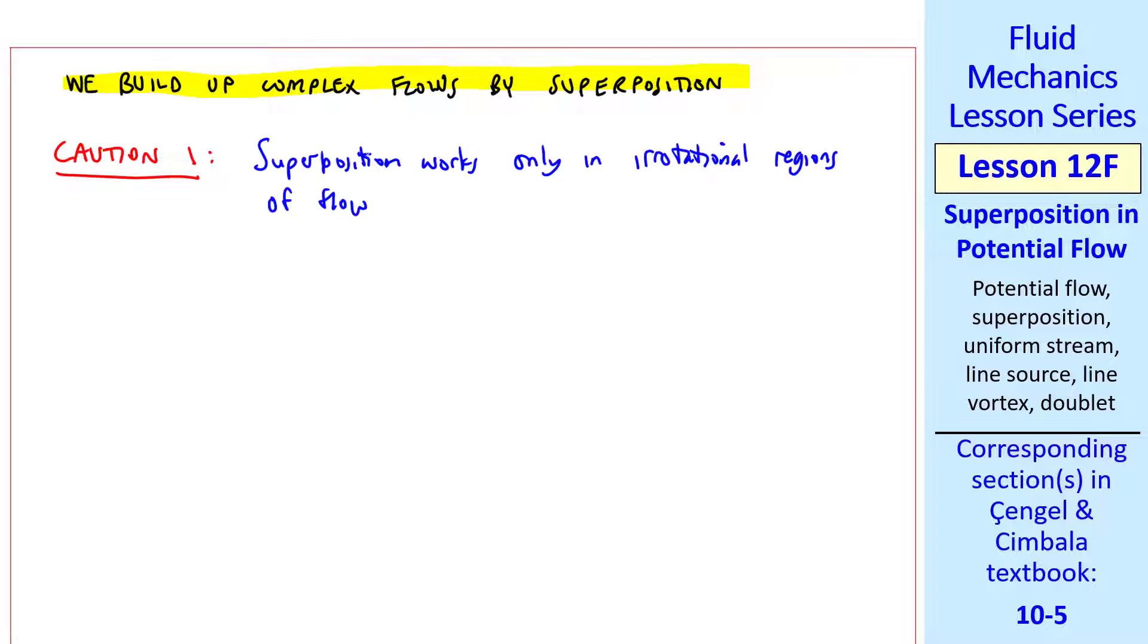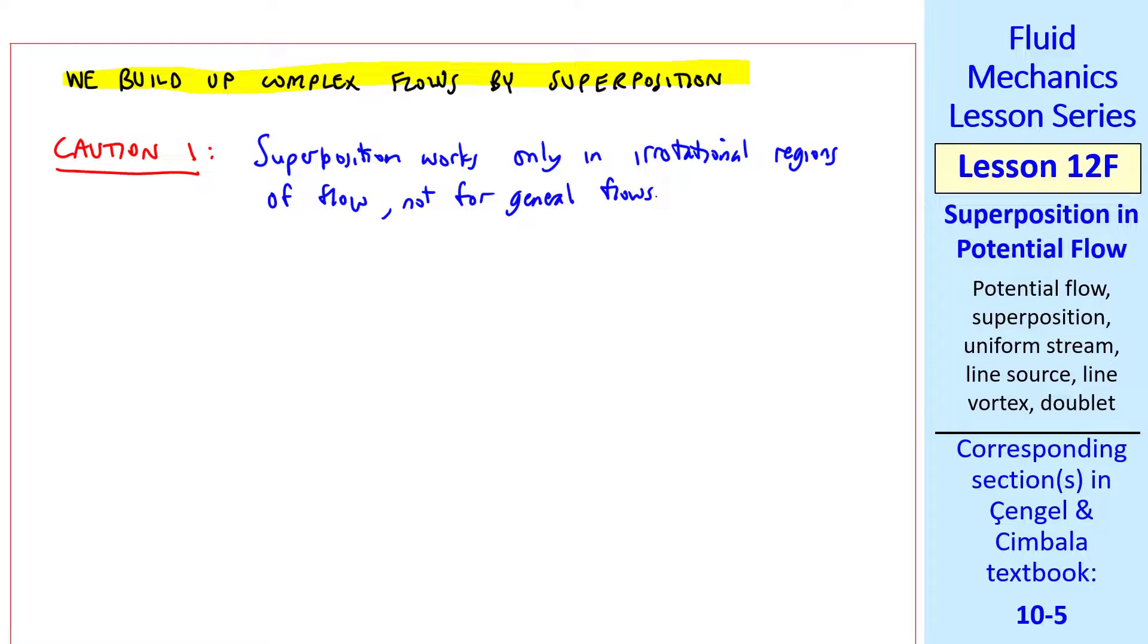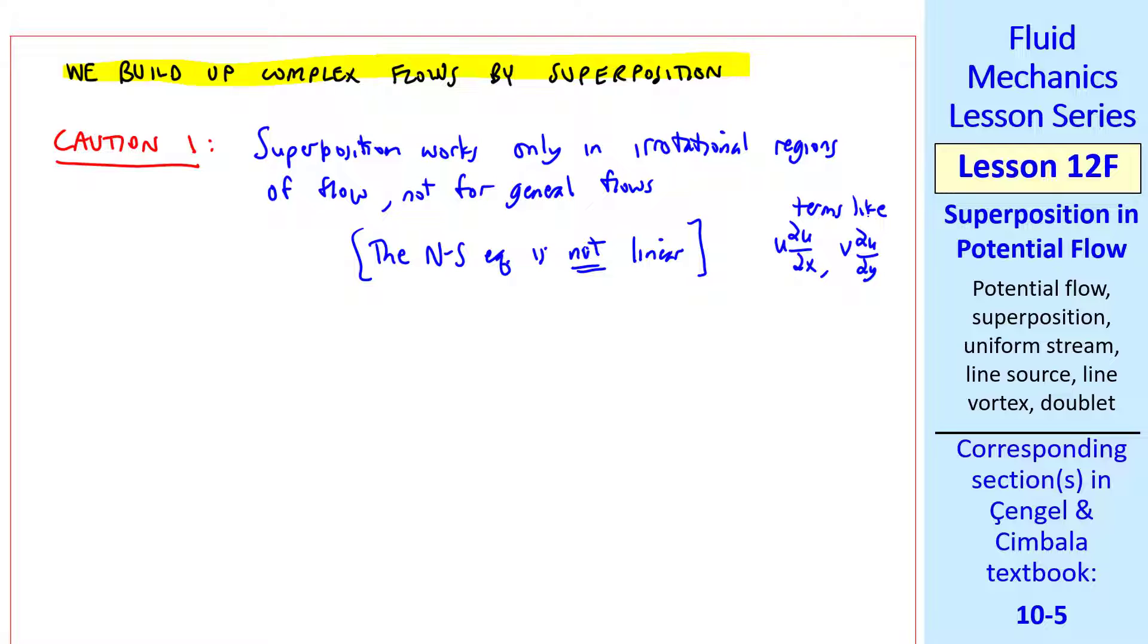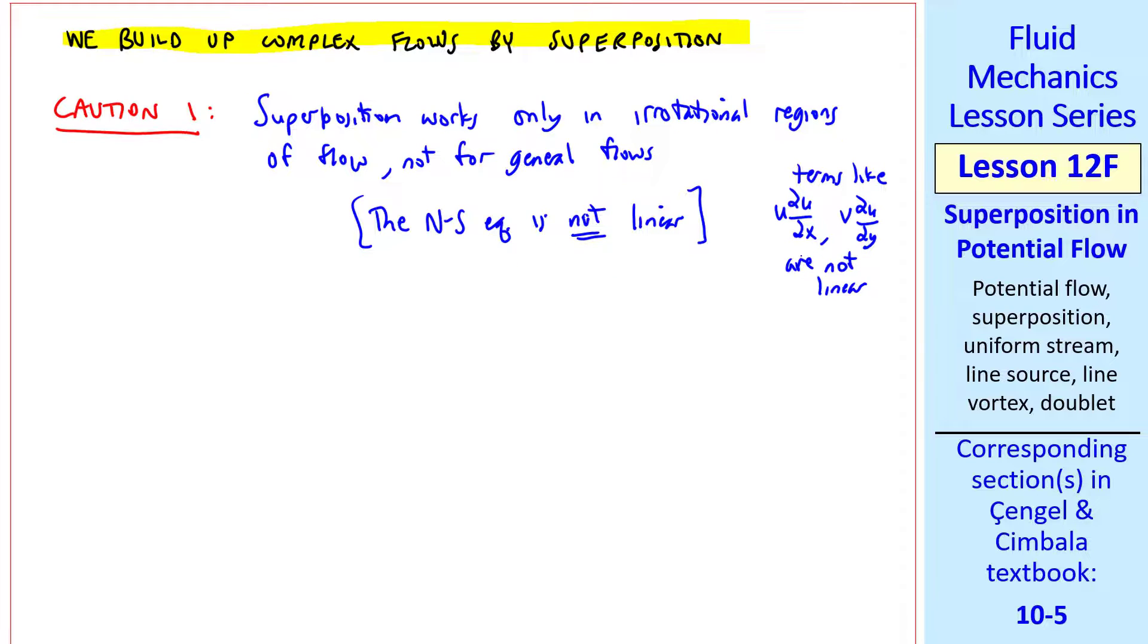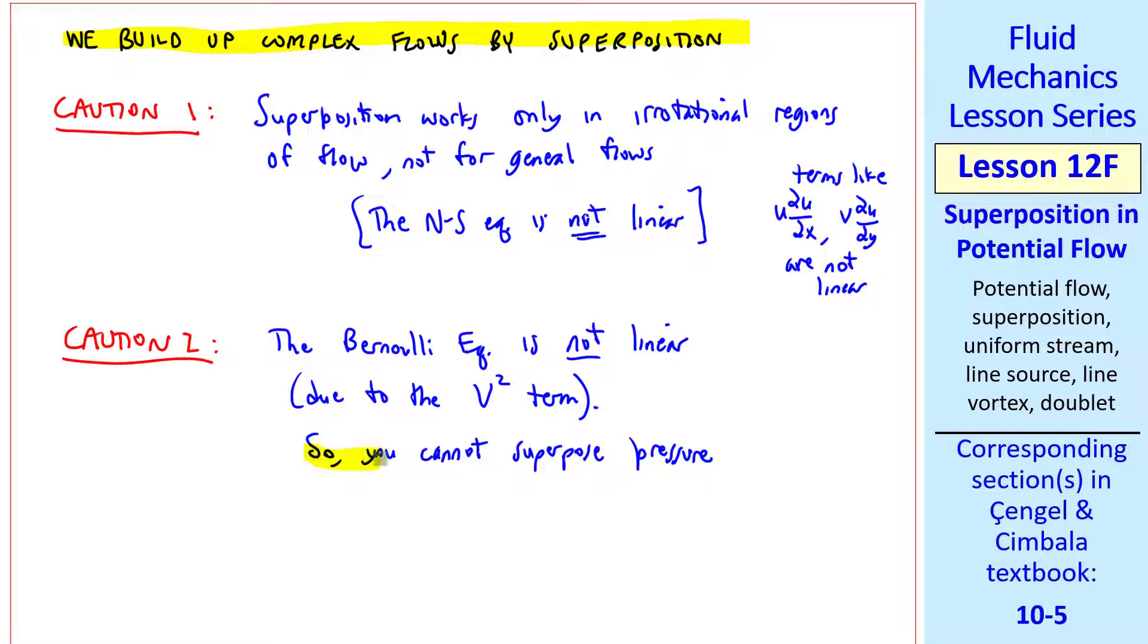I'll give two cautions here. The first one is that superposition works only in irrotational regions of flow, not for general flows. That's because the general Navier-Stokes equation is not linear. Terms like u del u del x or v del u del y are not linear. The second caution is that the Bernoulli equation is not linear, due to the v squared term. So you cannot superpose, or add up, pressure.